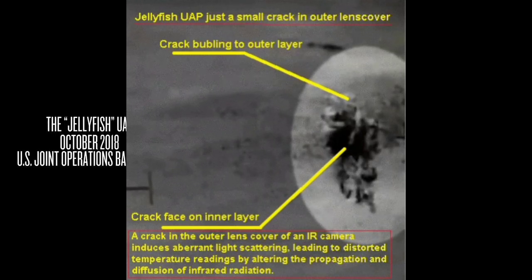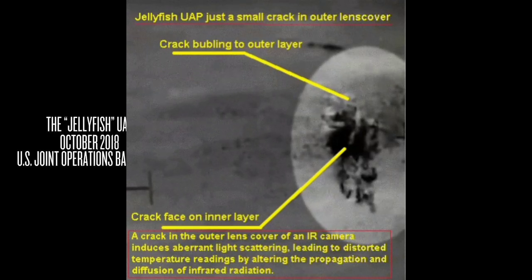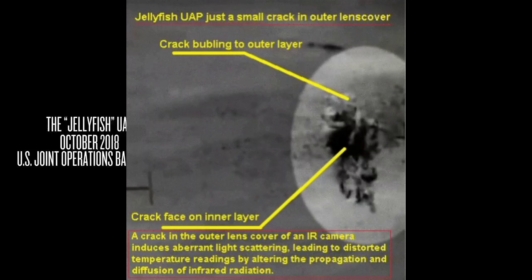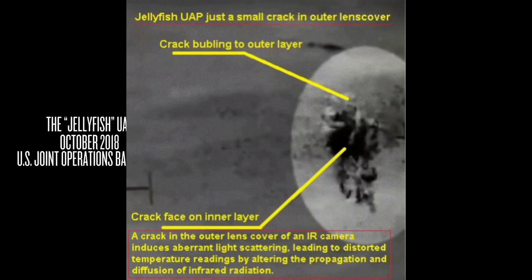Third, infrared camera anomalies: a small crack in the outer lens cover of an infrared camera can induce irregular light scattering, leading to distorted temperature readings. The video's portrayal of rapid color changes could be explained by the altered path and diffusion of infrared radiation through the damaged surface.